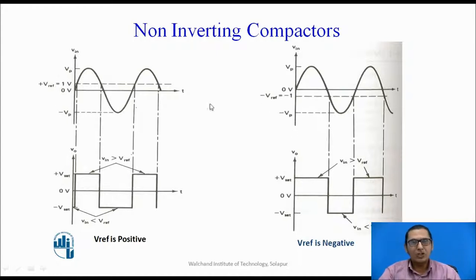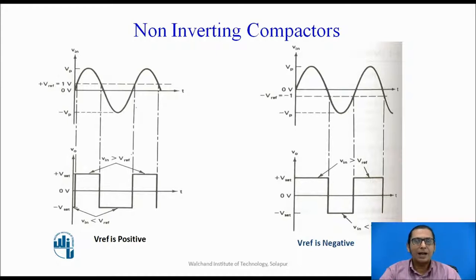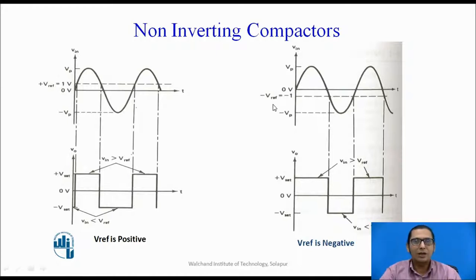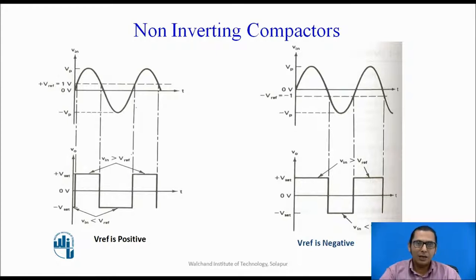What happens when V reference is negative? Instead of connecting plus 1 volt to the inverting terminal, if we connect minus 1 volt to the inverting terminal, the same rule applies. For all the time when the input at the non-inverting terminal is greater than that of the inverting terminal, the output is positive saturation. At the point where the input at the non-inverting terminal falls below minus 1 volt — which is the voltage connected to the inverting terminal — the output goes into negative saturation. So the non-inverting comparator uses a fixed reference voltage, positive or negative, applied to the inverting terminal, and the varying sinusoidal signal connected to the non-inverting terminal.